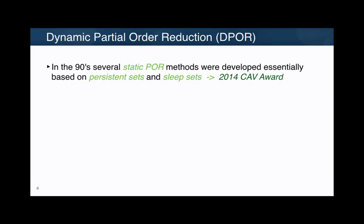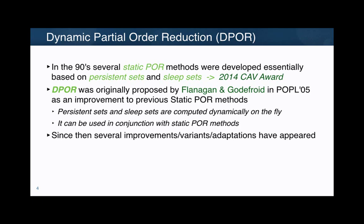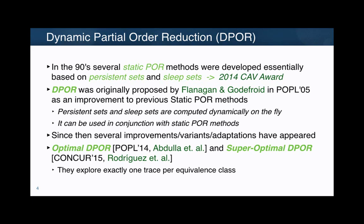Let us review some history. In the 90s, with the birth of the first software model checkers, several static POR methods were developed, and part of these works received the 2014 CAV award. One of the most relevant works was dynamic partial order reduction by Flanagan and Godefroid in the POPL 2005 paper, where they improved the approach and were able to compute these sets dynamically on the fly. Since then, there have been several improvements. The most relevant are optimal DPOR in POPL 2014 and the super-optimal in a CONCUR paper. They are optimal in the sense that they explore only one trace per equivalence class.